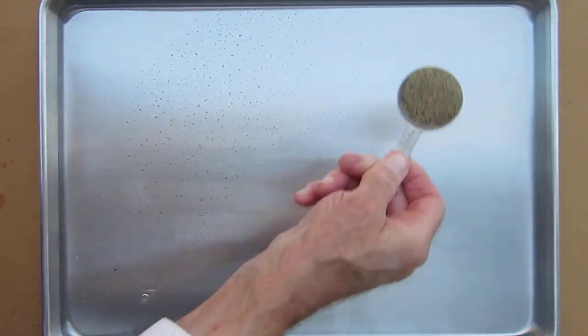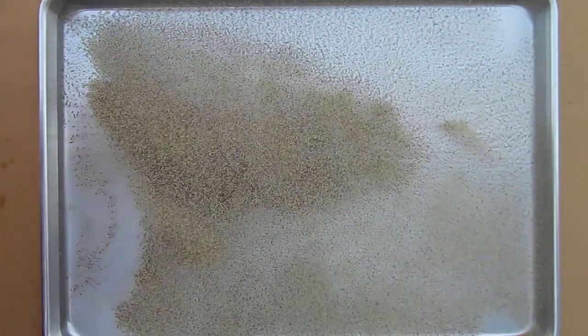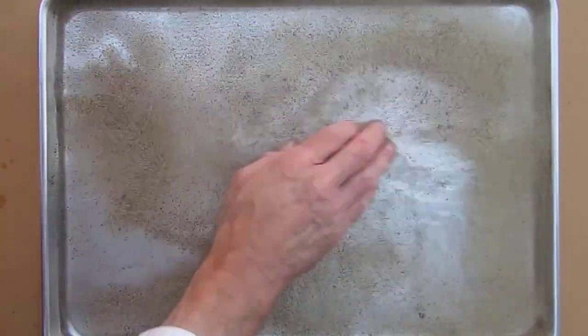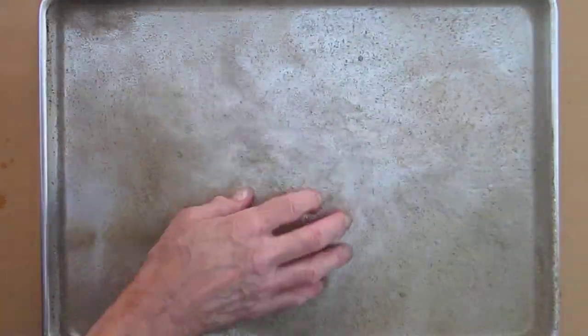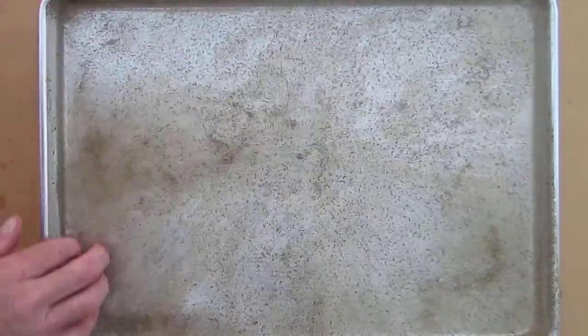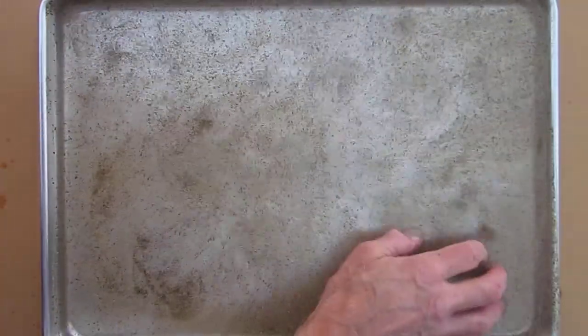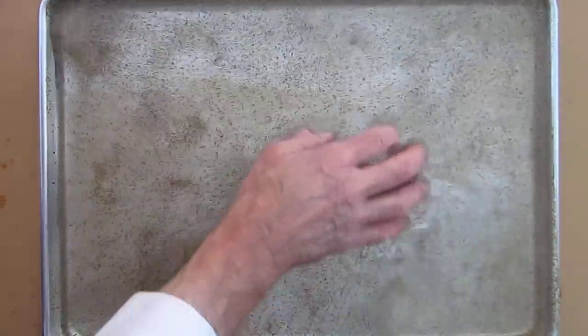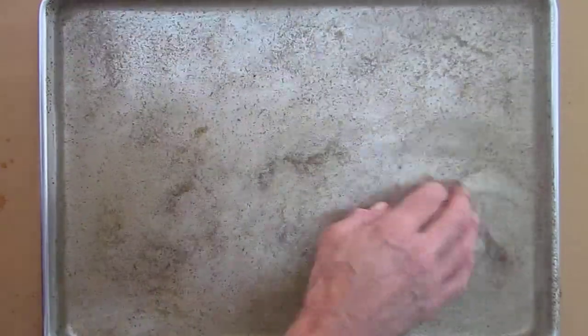We add a tablespoon of ground black pepper. We scatter it around and mix it in. We want it to soak up the water and sink. This may take a little while. We spread it around so it's fairly uniformly spread. We'll break up any clumps.